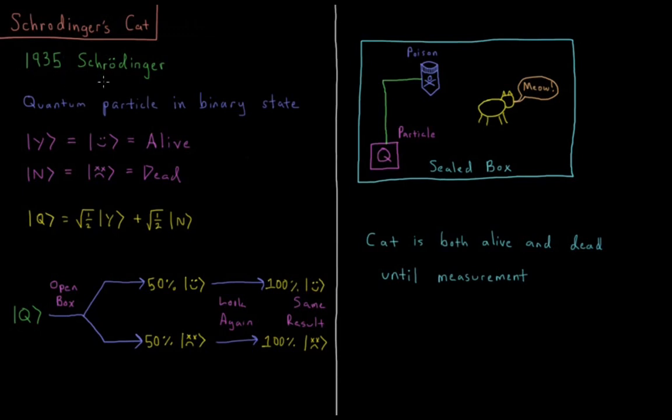So in 1935, Schrodinger, the same guy of the Schrodinger equation, proposed the following thought experiment.